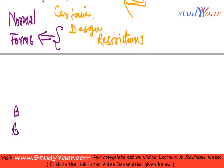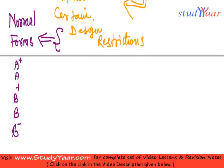Similarly, we have B minus grade, then B grade, then B plus grade, then an A grade, and an A plus grade. In the same manner, the normal forms or design restrictions are arranged in a hierarchy. We have normal forms like first normal form, second normal form, third normal form, and then something called BCNF.